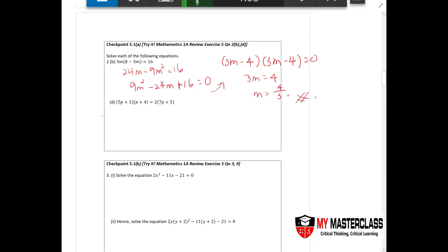Now part d. What do you do? You expand, so you do your rainbow method. You have 5p times p plus 4, plus 1 times p plus 4, equals to 14p plus 10. 5p square plus 20p plus p plus 4 equals to 14p plus 10.